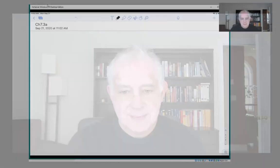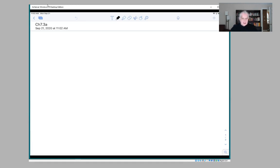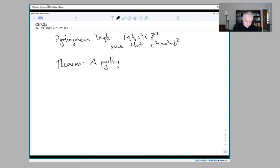So we gave the example of the Pythagorean theorem, of Pythagorean triples. If you'll recall, a Pythagorean triple is a collection of three integers a, b, and c such that c squared equals a squared plus b squared. And we proved a theorem that a Pythagorean triple exists by presenting an example.